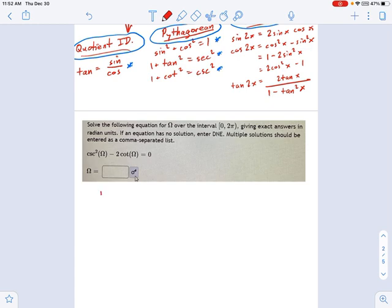So let's try using a quotient identity on here and rewriting this thing as one over sine squared omega, that's cosecant squared, minus two cosine omega over sine omega equals zero. Well, what does that say?